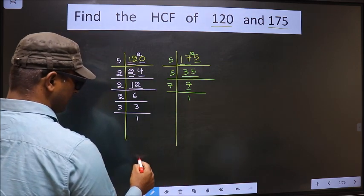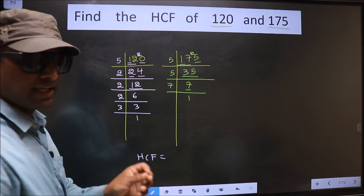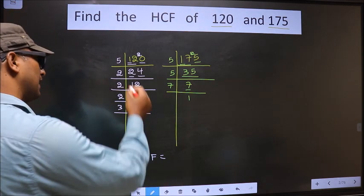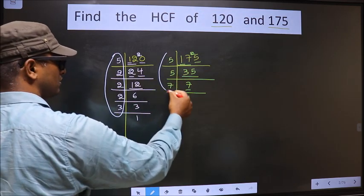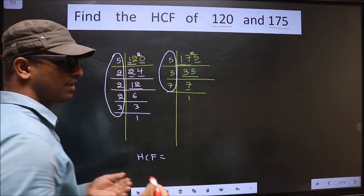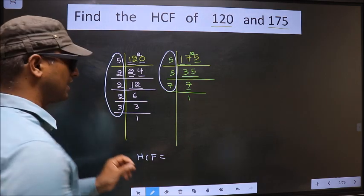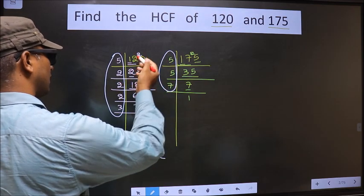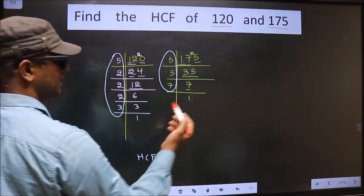So now our HCF is the product of numbers that should be present here and also here. I repeat, product of numbers which should be present in these 2 places. So now we should find the numbers present here and here. Let us find.